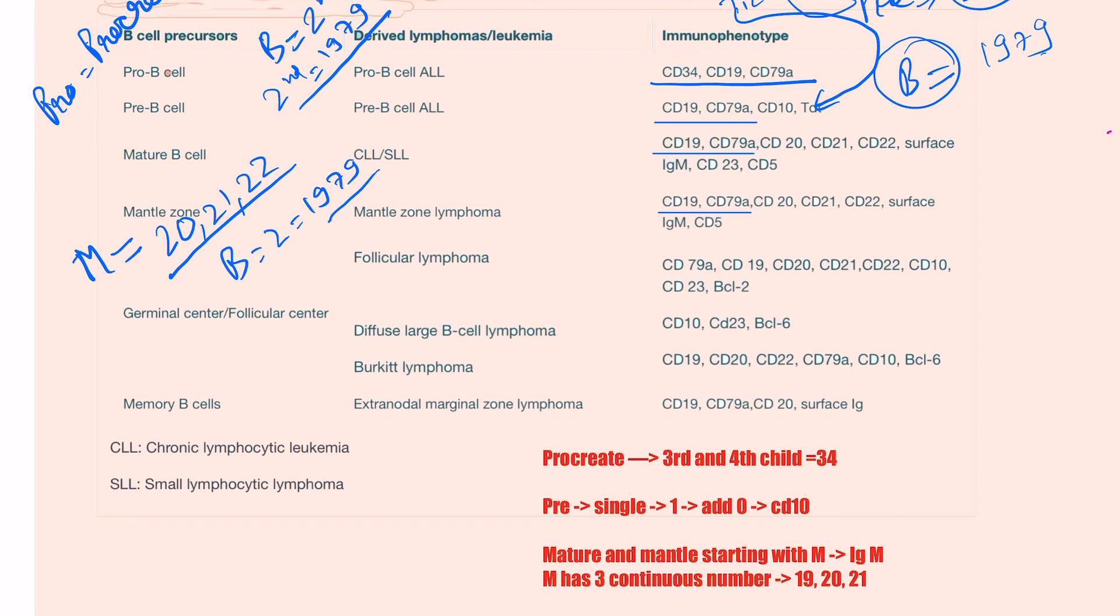Now we move on to the surface IgM. What we will get here is that whenever there is M associated in the letter, then we have IgM. Therefore in mature B cell and the mantle zone lymphoma, here we have IgM.